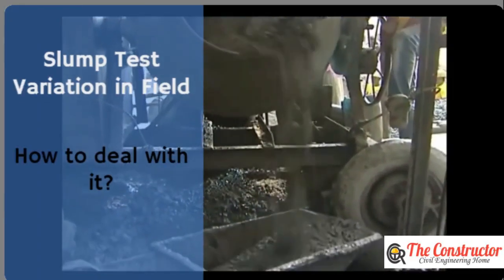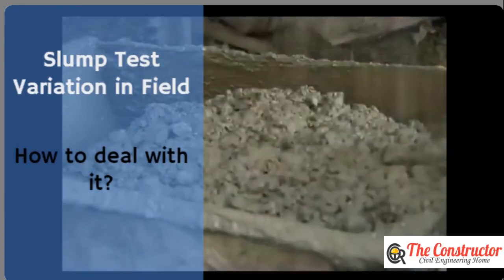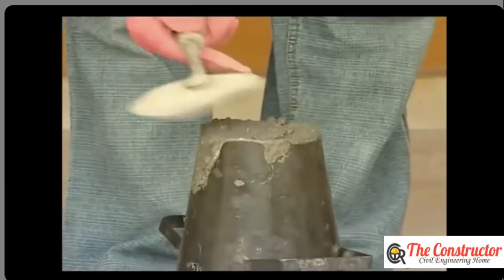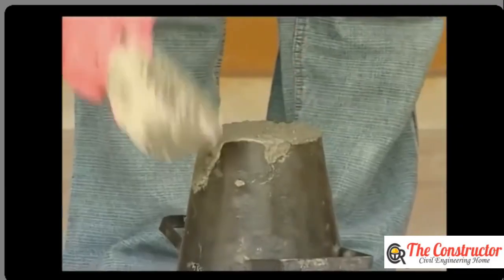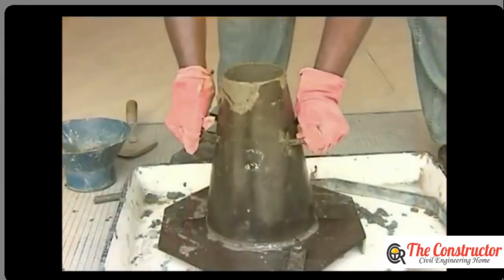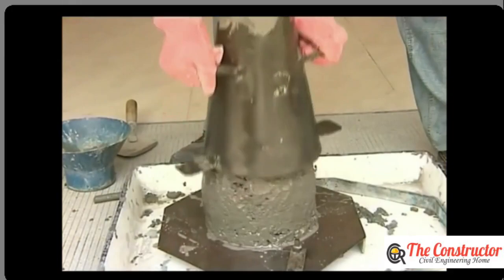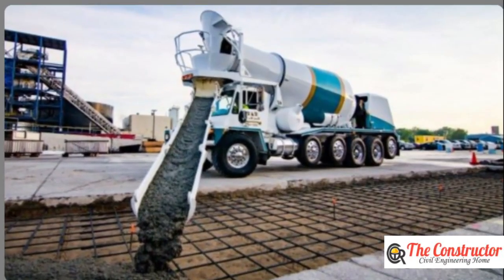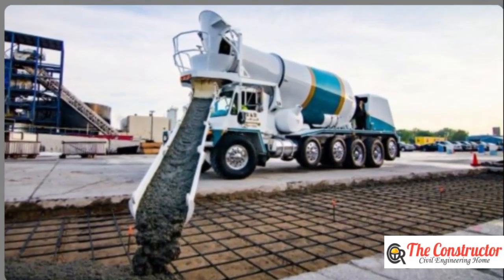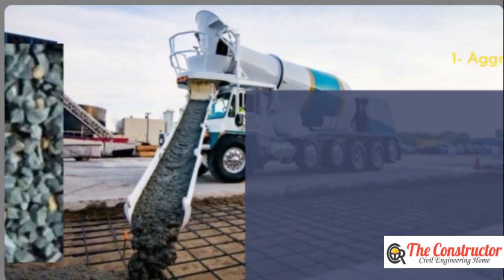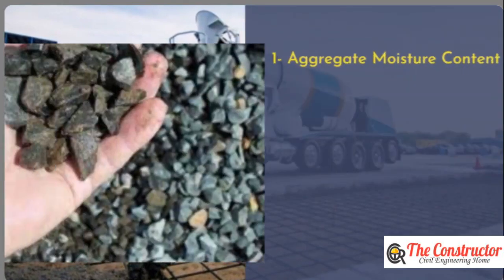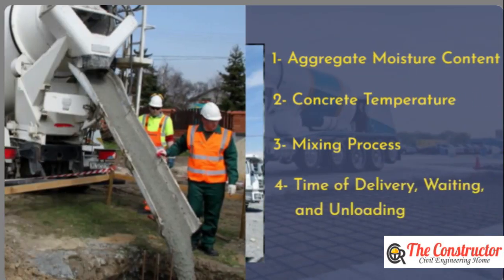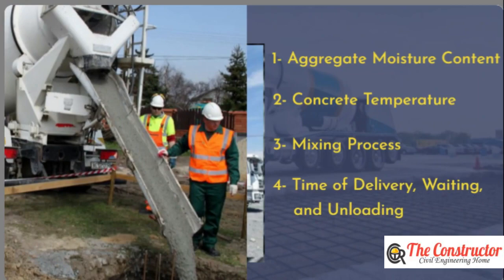Concrete slump variations at site — how to deal with it? The variation of concrete slump from one truck to another is due to aggregate moisture content, concrete temperature, mixing process, and time of delivery, waiting, and unloading.